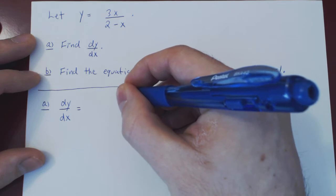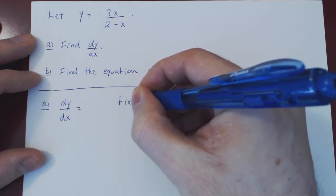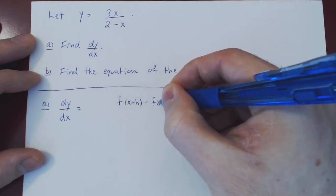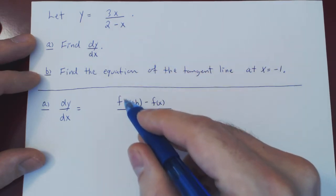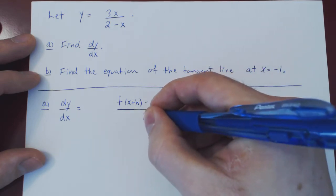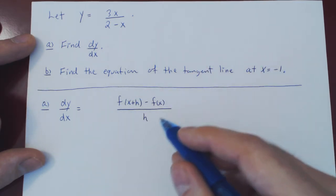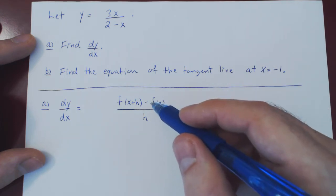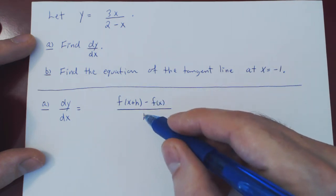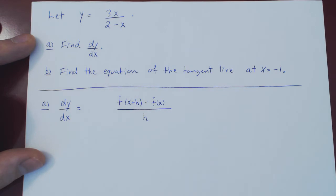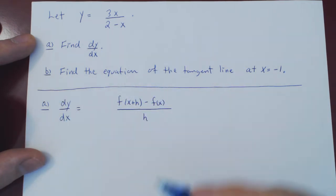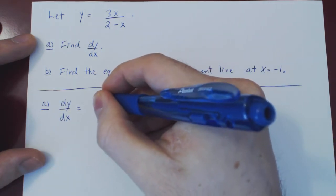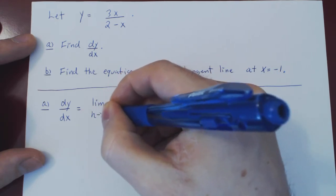You first find the slope of the secant line — f of x plus h minus f of x, total change in y over total change in x, but x plus h minus x leaves you with h. That is the slope of the secant line. And as you let h approach 0, the secant line will approach the tangent line. Therefore, the slope of the secant line will be approaching the slope of the tangent line. That only happens as we are letting h approach 0.